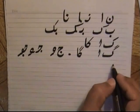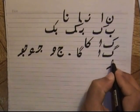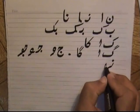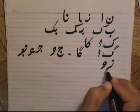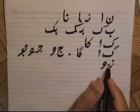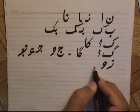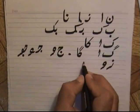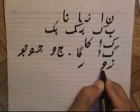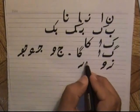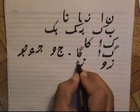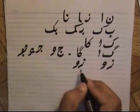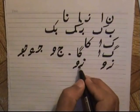There is one letter ze and one letter waw. Both are non-connectors, so they will appear as independent letters. We cannot connect them; ze-waw: 'zoo'.